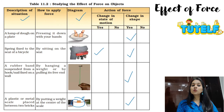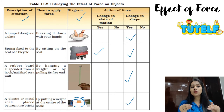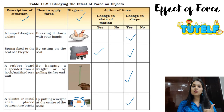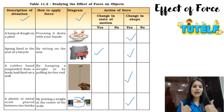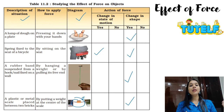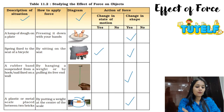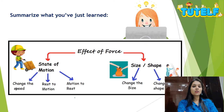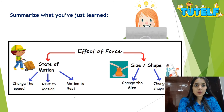To clarify whether there is an effect of force on an object, you can simply check if there is a change in the state of motion or a change in the physical appearance. If either of those things is happening, then there is an effect of force. I hope this is clear to you. Let's do a quick revision.